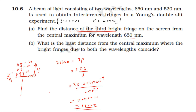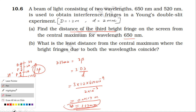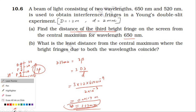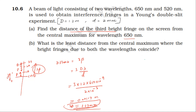The second part asks: what is the least distance from the central maximum where the bright fringes due to both wavelengths coincide? For this, we need to find where fringes from both wavelengths meet at the same point on the screen.